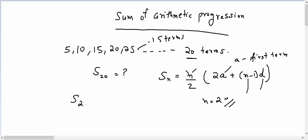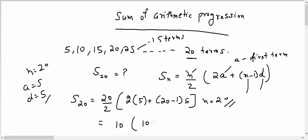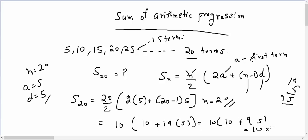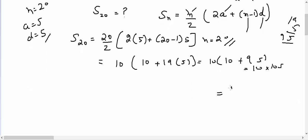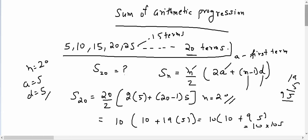Now let's solve this example: S20, because I want to find the sum of 20 terms of this AP. It will be equal to 20 over 2, with n equal to 20, first term A equal to 5, and common difference D equal to 5. So we get 10 times (2×5 + 19×5), which is 10 times (10 + 95), giving 10 times 105, which equals 1050. So the sum of 20 terms of this arithmetic progression is 1050.